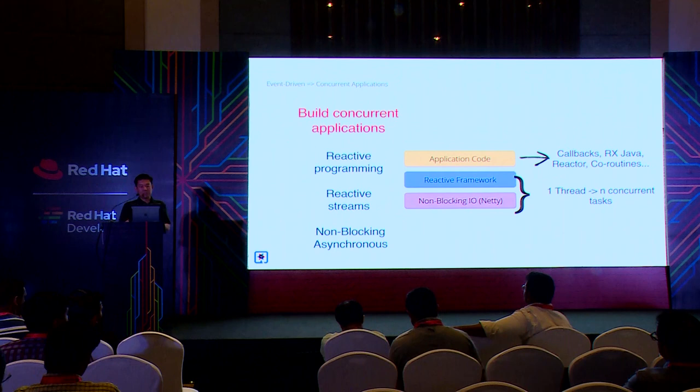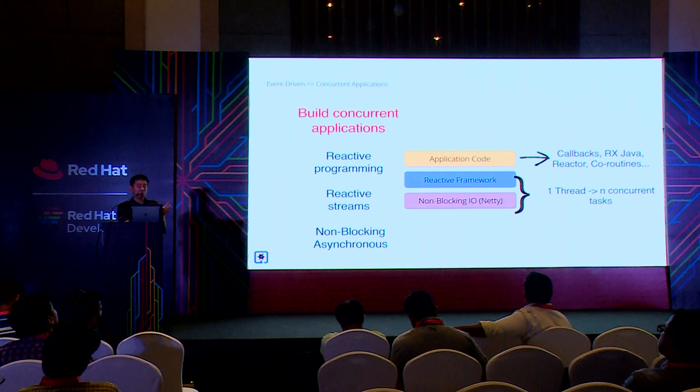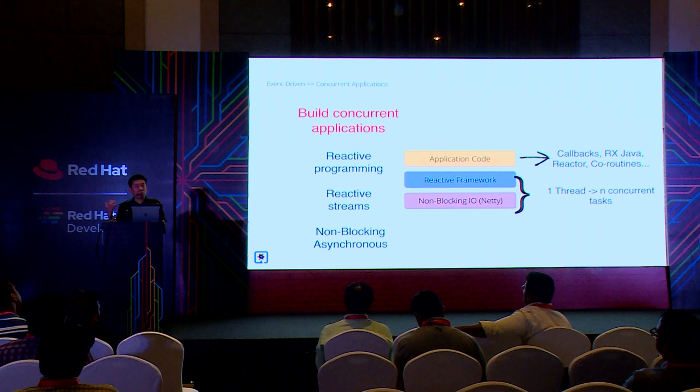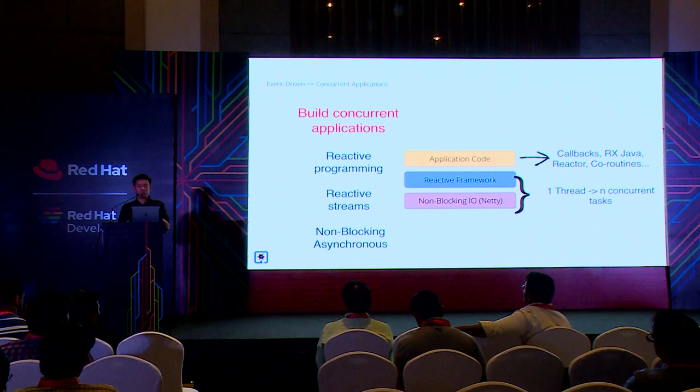With a blocking framework using multi-threading, you have 100 threads processing 100 tasks at the same time. With a reactive framework using an event loop, you can technically have an infinite number of requests being processed simultaneously — your system may get slower under load, but it will still be able to handle the input it's receiving.